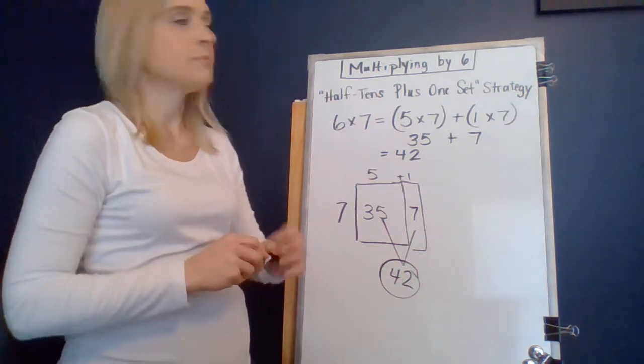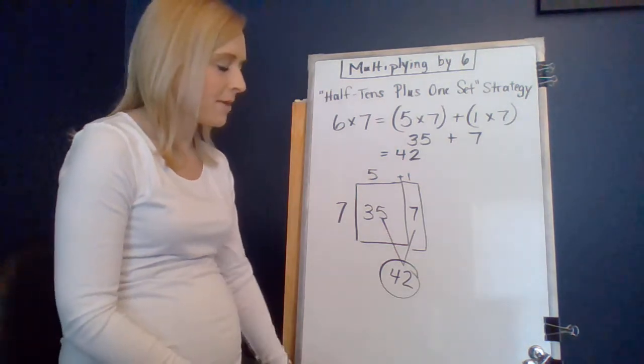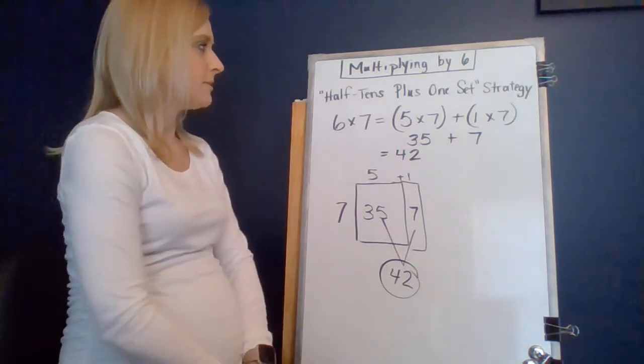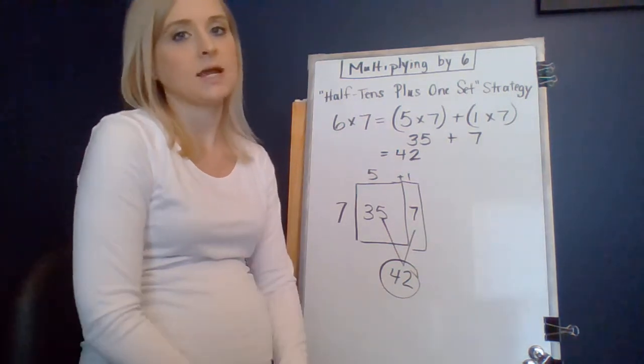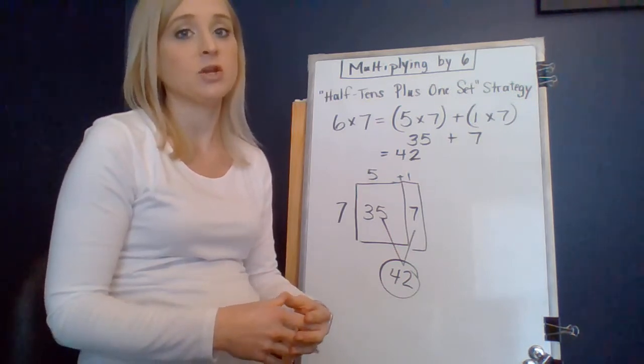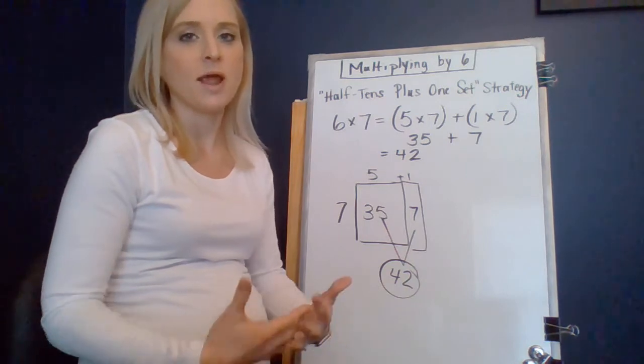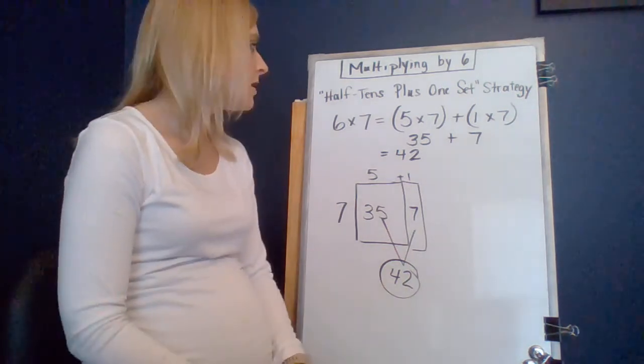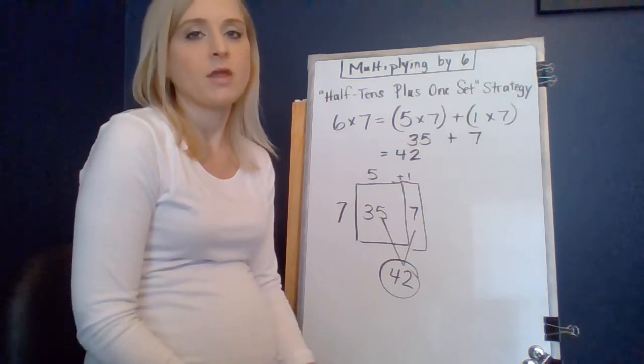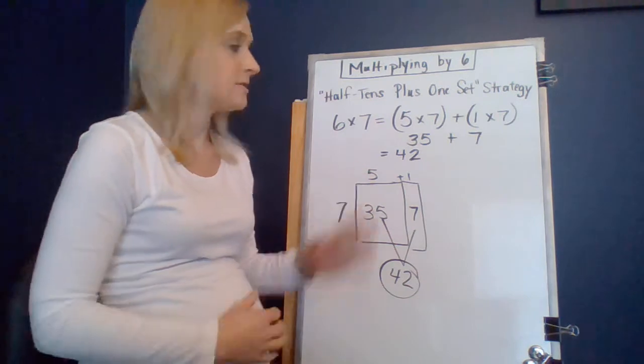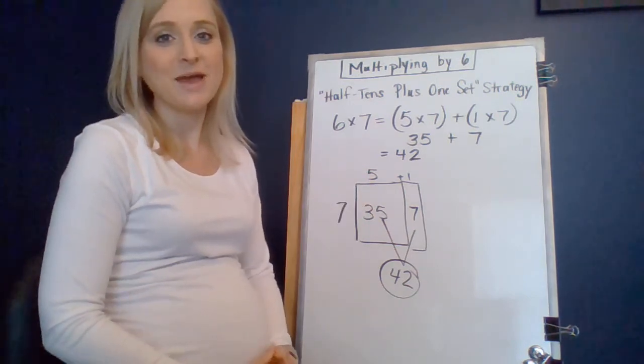So, that's the multiplying by 6 strategy, one of the strategies that you can use. You're not limited to that. That is definitely something you can use. I'm also going to try to post some of the Bridges posters that kind of outline the strategy a little bit more in grid form. That's probably more age appropriate for 3rd, 4th, and 5th graders. Hopefully I can link those pictures of those posters to these videos in the comments. Good luck with multiplying by 6. Thank you.